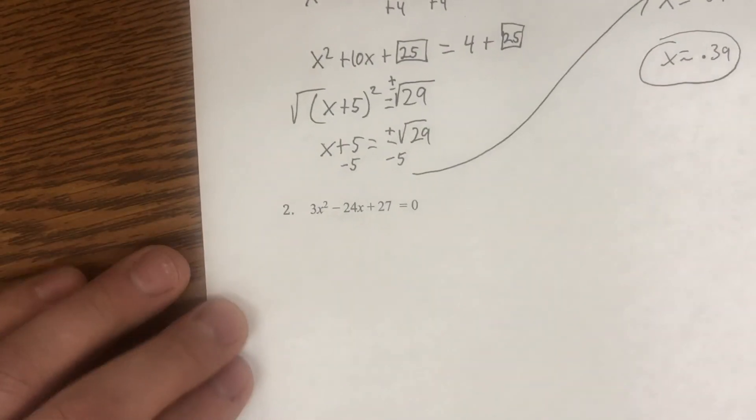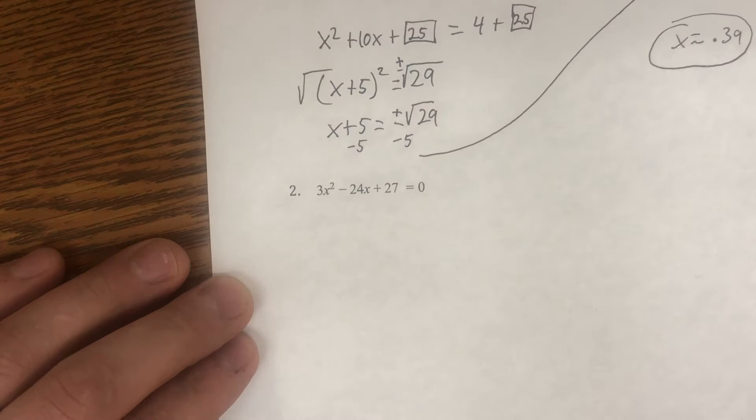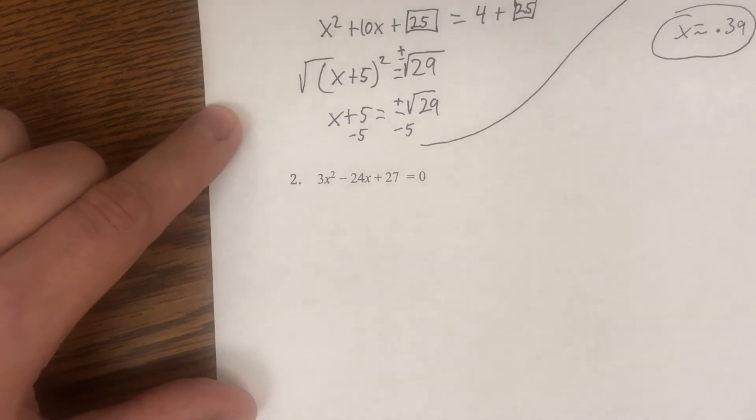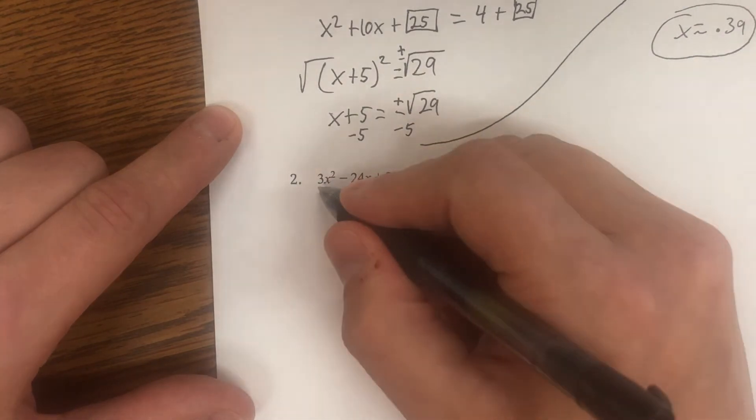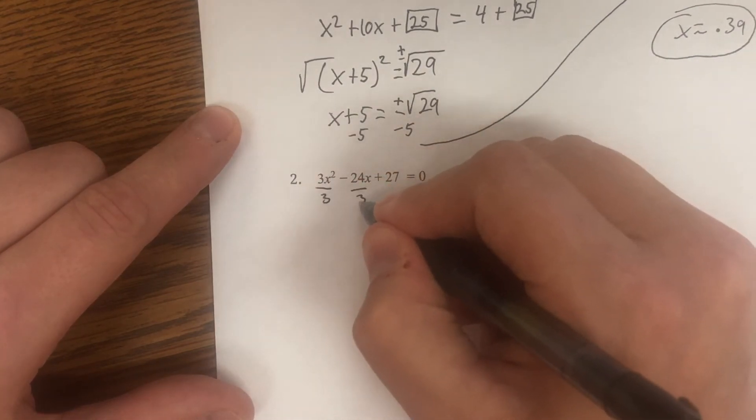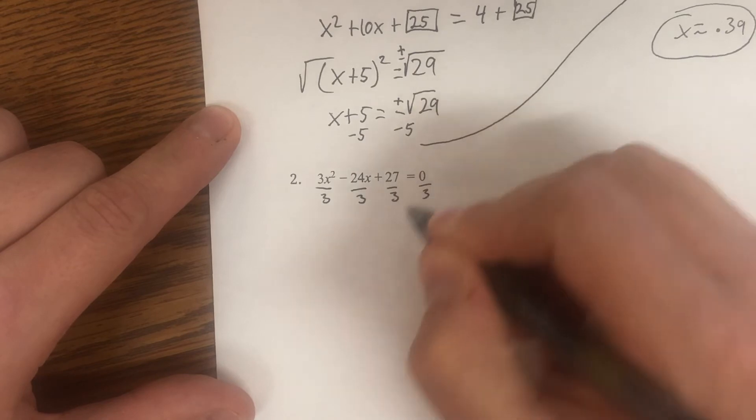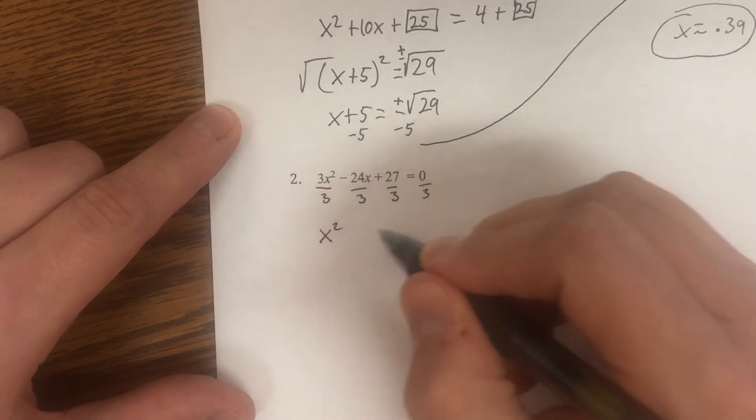So you will need to type those in to your calculators to find them. We don't know what the square root of 29 is off the top of our head. Round it to two decimals. Next one, last example for completing the square. In this case, our leading coefficient is not one, it is three.